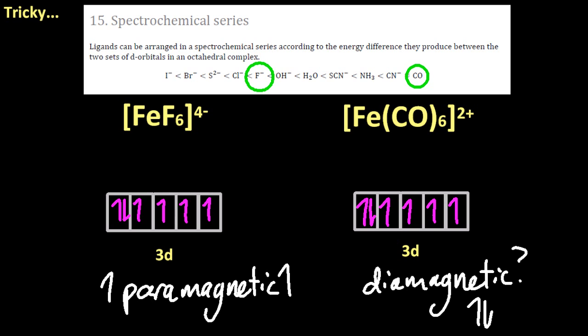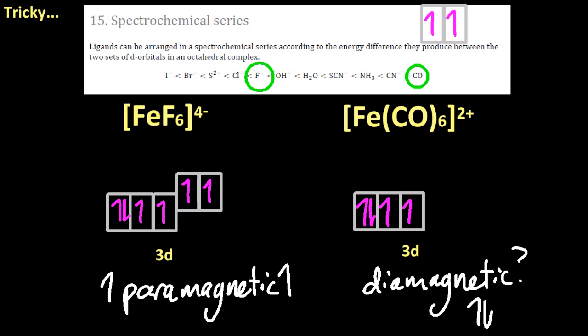And you can see that fluoride is there and carbon monoxide is at the very right hand side. So that's going to give a much bigger split. I'm going to put it right up there. So because the energy difference is so big with the carbon monoxide, the electrons can't maintain that very high energy up in those boxes. They're going to come down to the lower boxes.